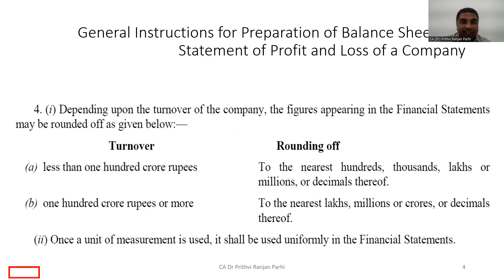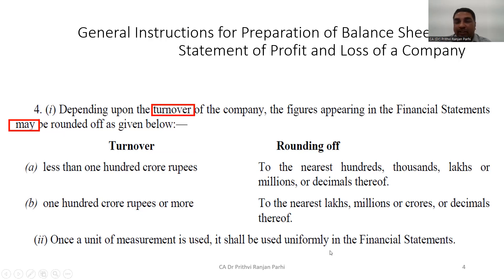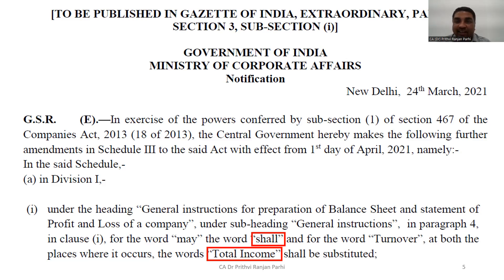If you see the earlier provision, there was an option — figures 'may' be rounded off on the basis of turnover. Now it has been amended: 'may' has been substituted with 'shall', meaning there is no choice, you have to do it. Turnover is replaced with total income. And one more thing — once a unit of measurement is used, it shall be used uniformly in the financial statement throughout.